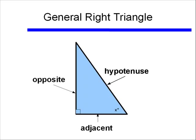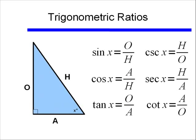Let's remind ourselves what our general right triangle looked like. If I give you an angle X for a right triangle — we can tell it's a right triangle because of the square in the corner — we can talk about the sides in terms of opposite, adjacent, and hypotenuse according to angle X. Our six trig ratios are: sine X is opposite over hypotenuse, cosine is adjacent over hypotenuse, tangent is opposite over adjacent, cosecant is hypotenuse over opposite, secant is hypotenuse over adjacent, and cotangent is adjacent over opposite.